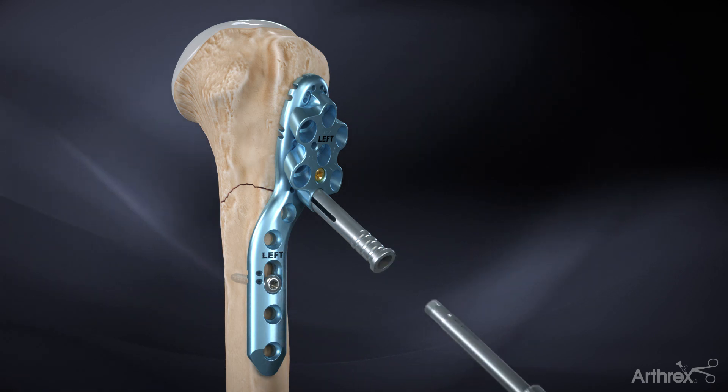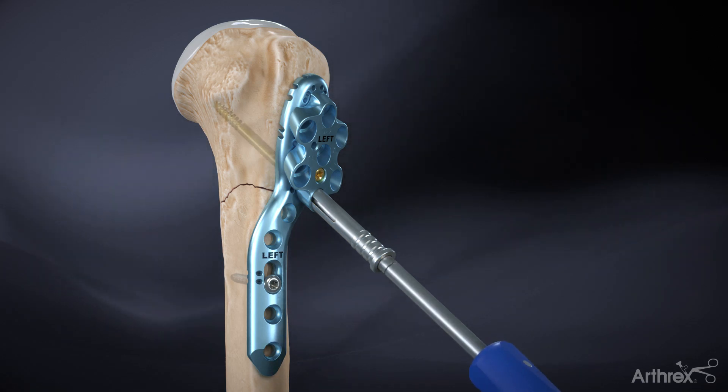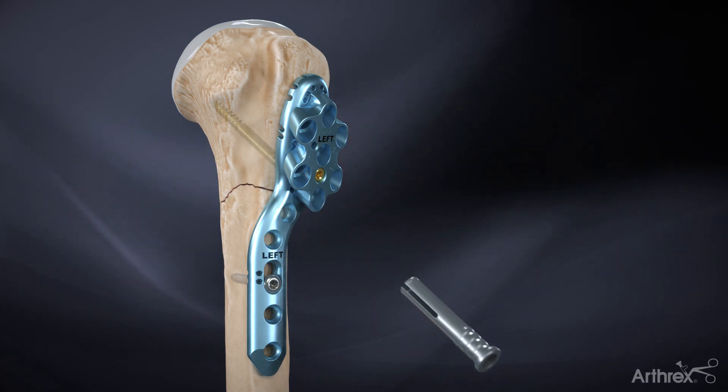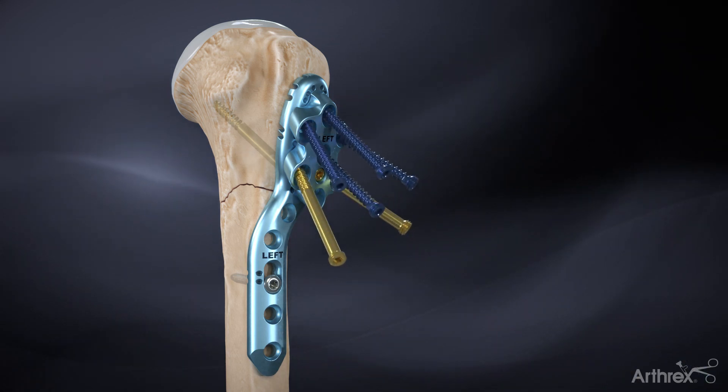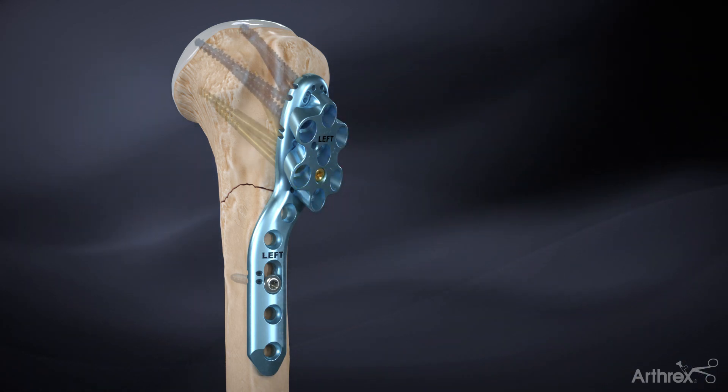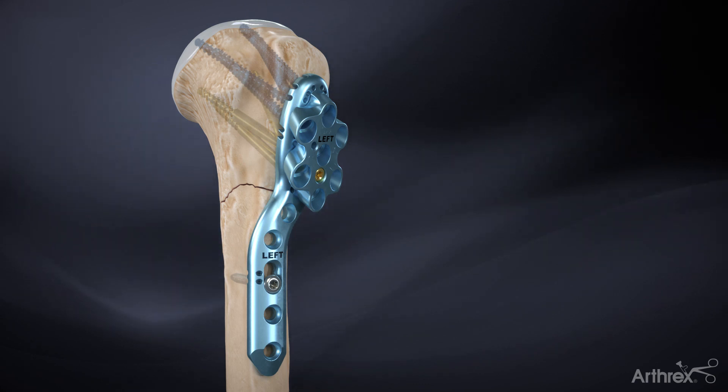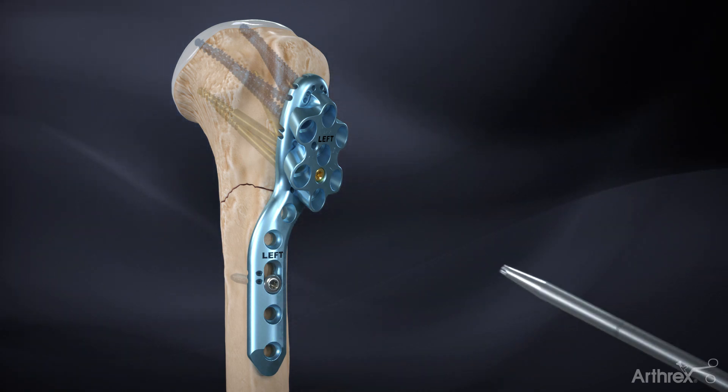Unthread and remove the drill guide from the sleeve and insert a 4.0 millimeter partially threaded locking screw through the sleeve. Repeat the following steps for the remaining proximal screws. The choice of fully or partially threaded 4.0 millimeter screws is based on surgeon preference. Once all the proximal screws are inserted, remove the alignment guide.